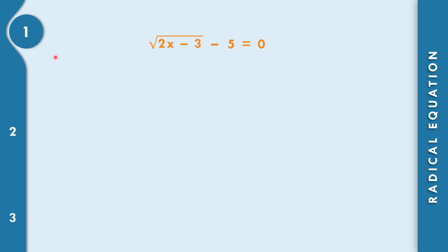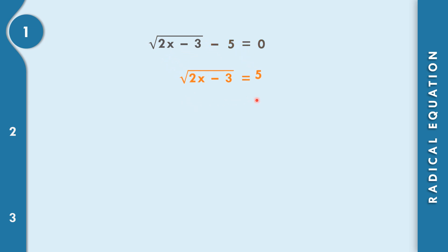In example number 1, we have the square root of 2x minus 3 minus 5 equals 0. First, we move negative 5 to the right side, giving us the square root of 2x minus 3 equals 5. Then, to solve for x, we square both sides.